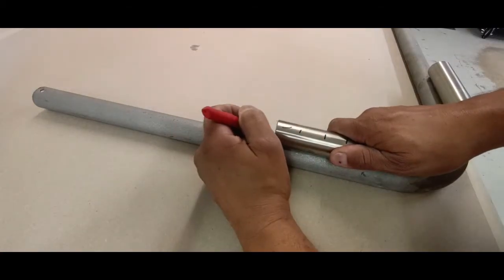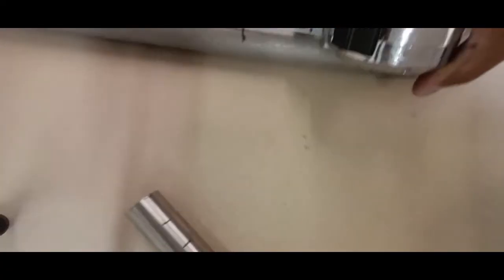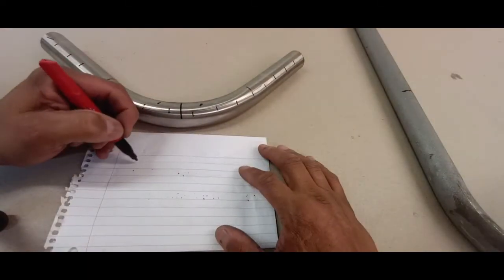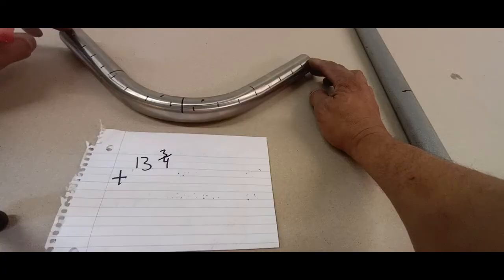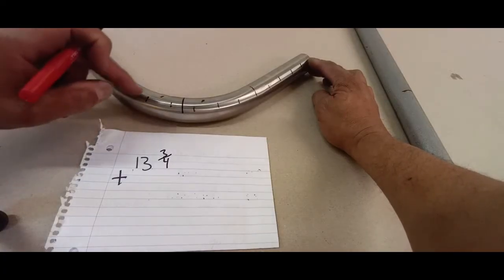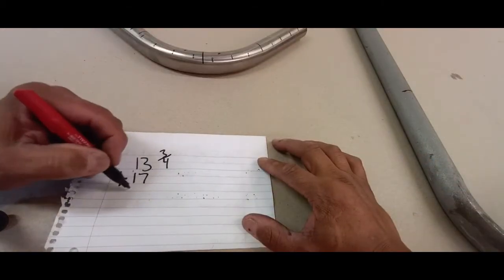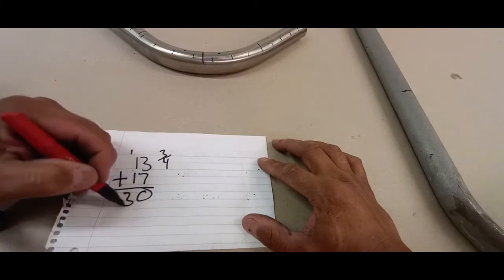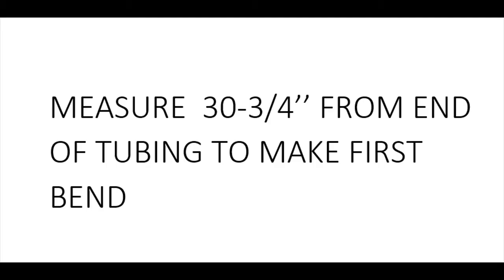Okay so now we've ascertained that we'll make a mark and we'll count to that mark and that is the reference start mark. Now a little bit of addition. I'm going to add 13 and 3 quarter inches to the start of the bend plus 17 for the total amount of the bend. Add those two numbers together: 30 and 3 quarter inches. Now measure 30 and 3 quarter inches from the end of the tubing to make the first bend.